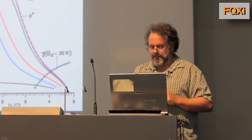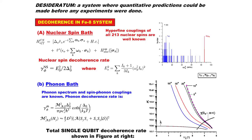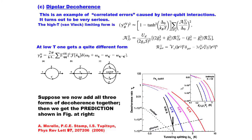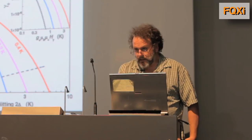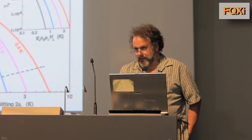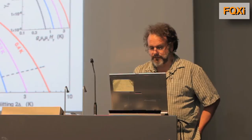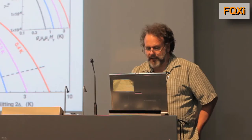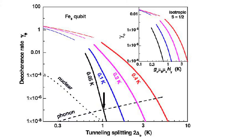The key about this particular molecule is we understand very well what kind of environment it's coupled to. It's coupled to 213 different nuclear spins — we know the couplings. It's coupled to phonons. And much more difficult, the molecules are coupled to each other in a macroscopic sample through long-range dipolar interactions. Long-range interactions are the nemesis of quantum computation because it's very difficult to apply error correction to these. So one of the things that was really important here was to understand what kind of decoherence these would cause. The predictions were shown in this graph here.